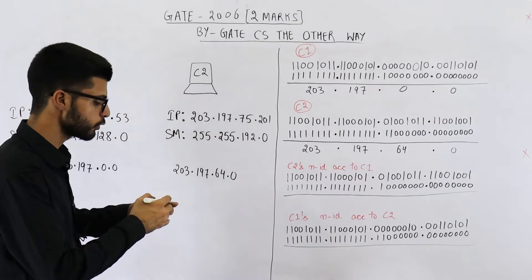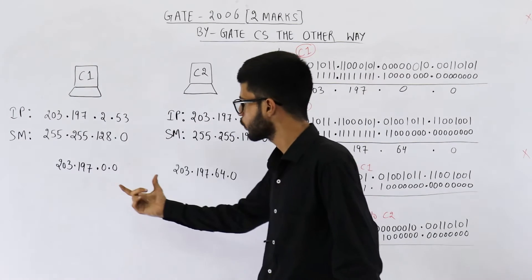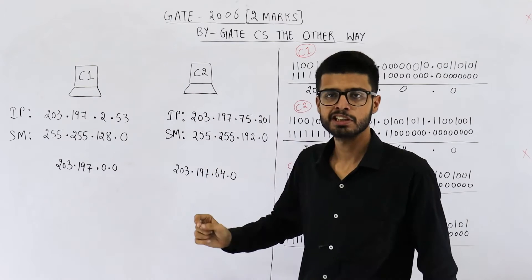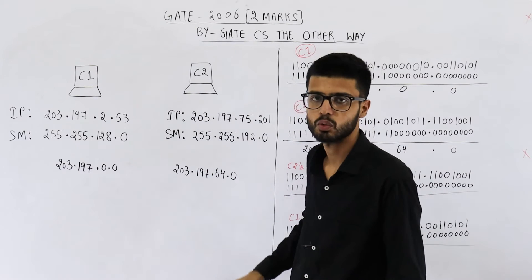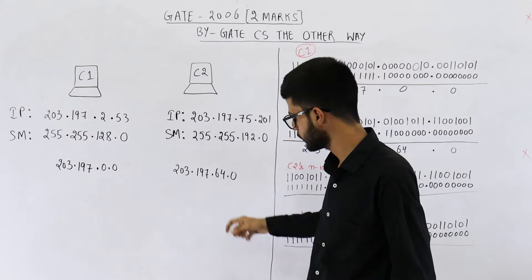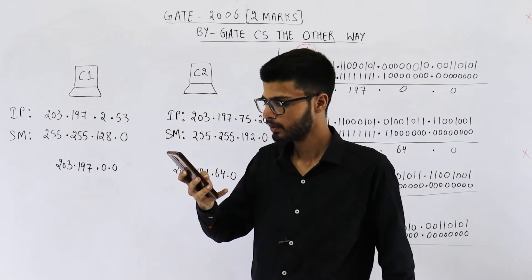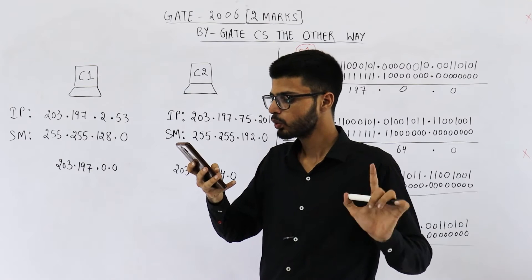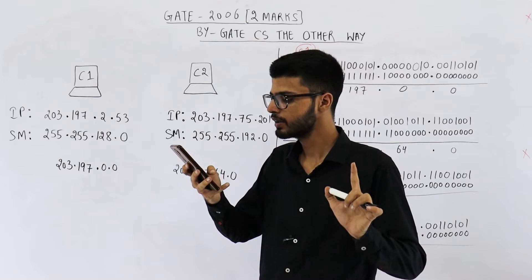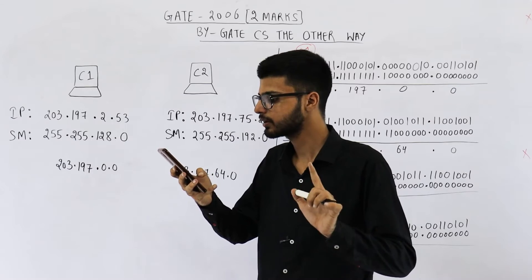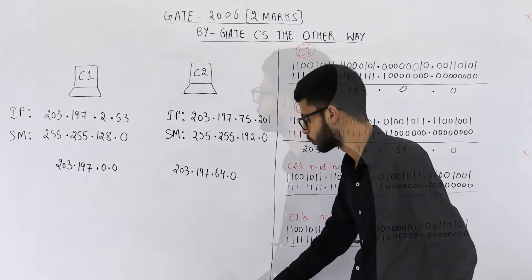Now some of you might think that because the network IDs of both machines are different, they lie in different networks. You might take the option which says both are in different networks — that option D is the answer, which says C1 and C2 both assume they are on different networks. But this is not actually true.